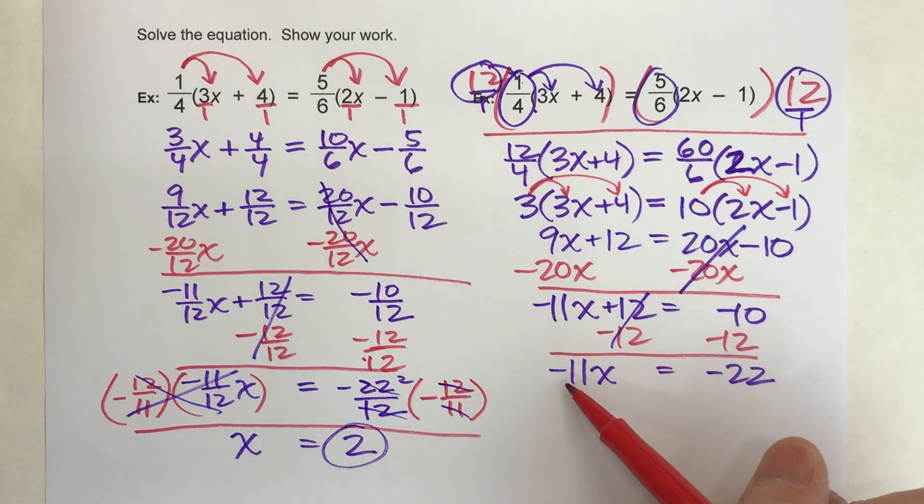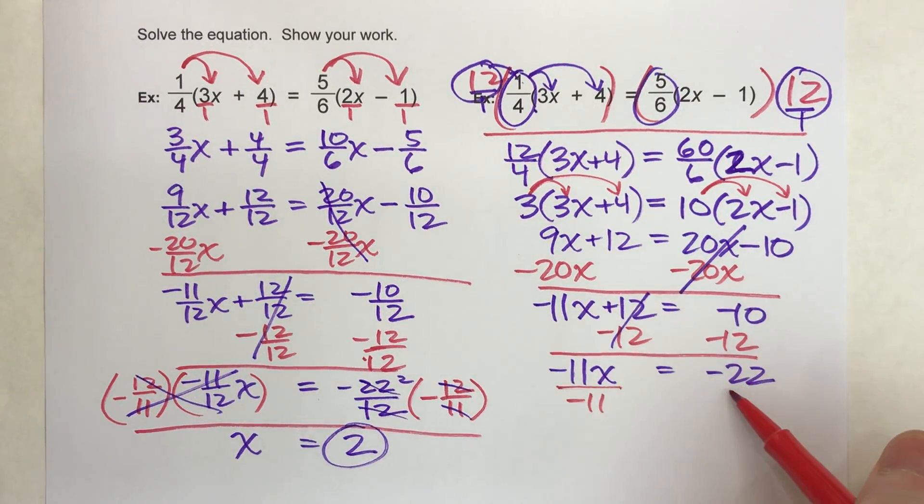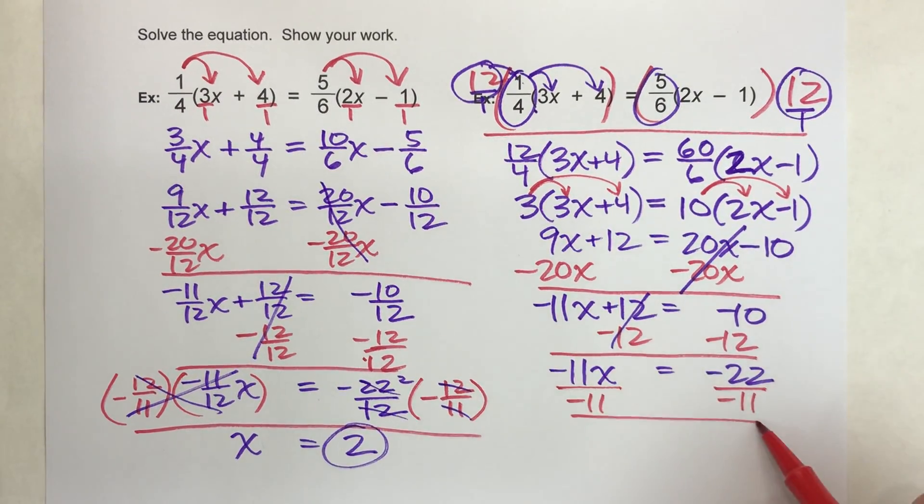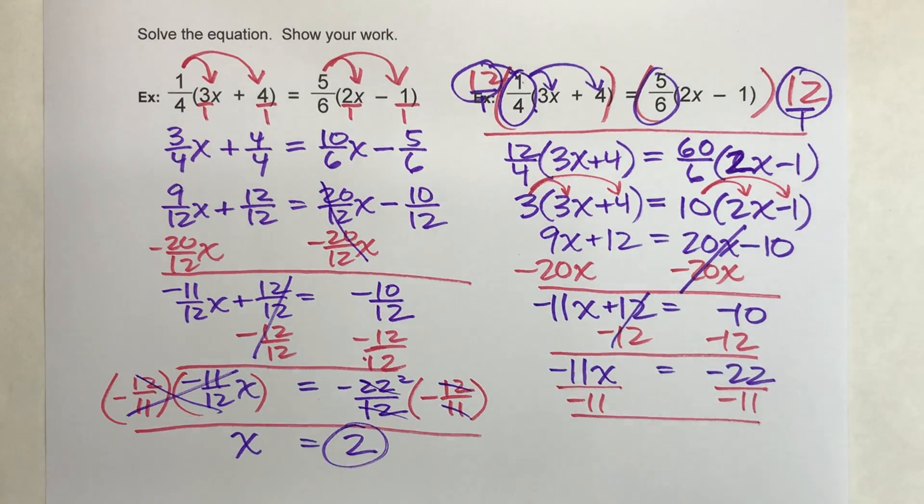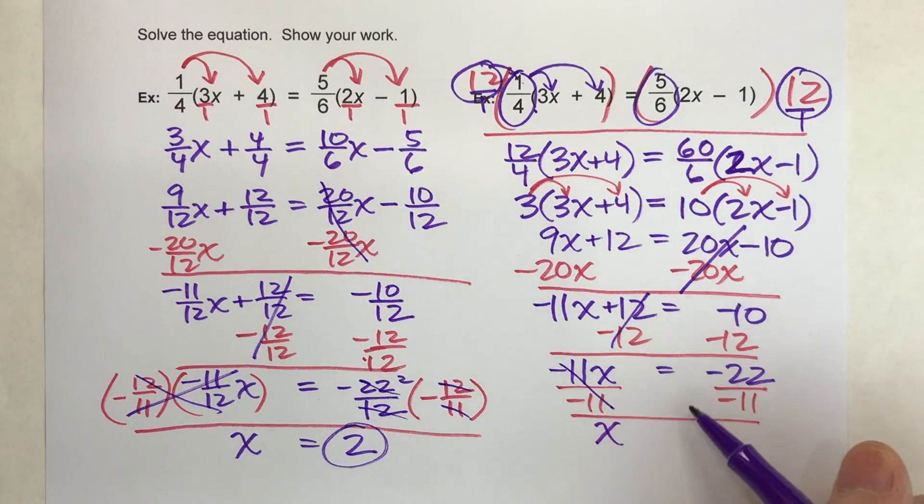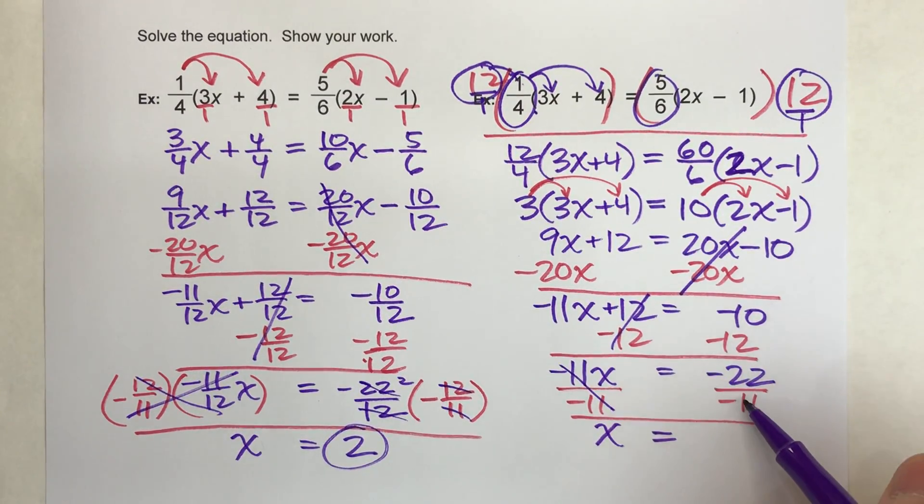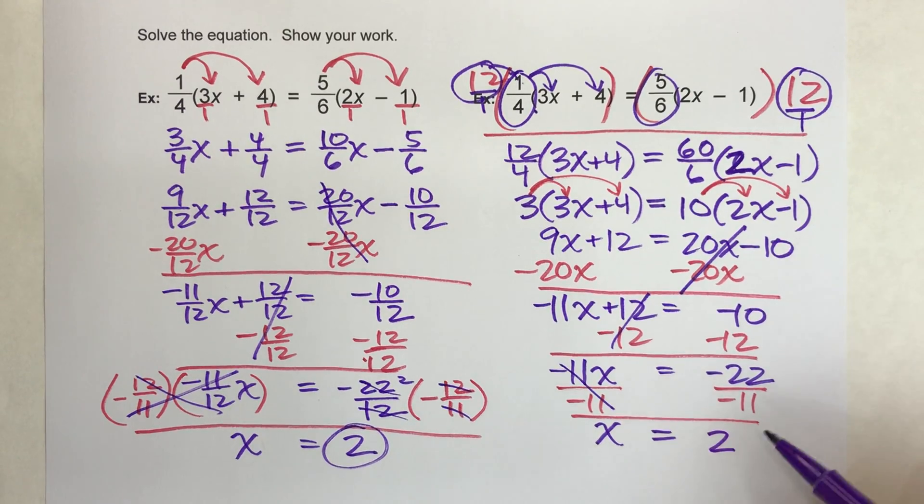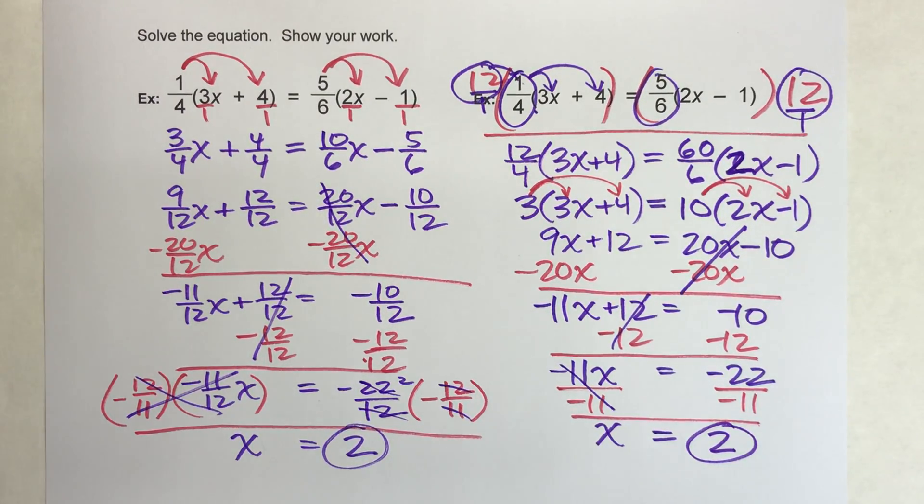And then my last step, divide both sides by -11. And all that's going to be left is x on the other side. Negative divided by negative is positive 2. There you go.